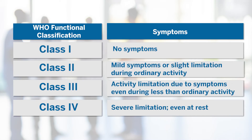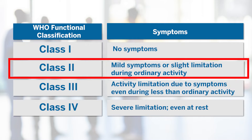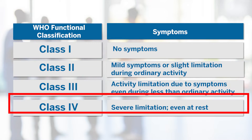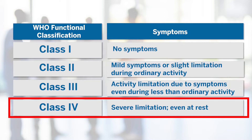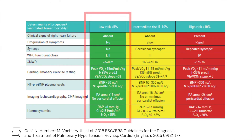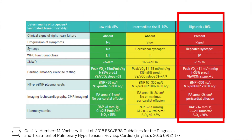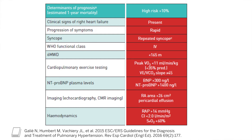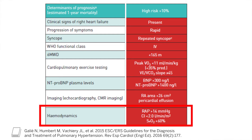Utilizing the World Health Organization criteria based upon functional class, it's helpful to understand the symptoms occurring in activities of daily life. For example, someone who is class 2 has mild symptoms such as mild shortness of breath or slight limitations during ordinary activity. However, someone in class 4 has severe limitations even at rest. We take these WHO classes and further risk stratify people into low, intermediate, or high. Those in the high risk category will have more evidence of advanced disease and more limitation with activity, higher lab values such as right atrial pressure suggesting volume overload, and a lower cardiac index demonstrating worse cardiac function.